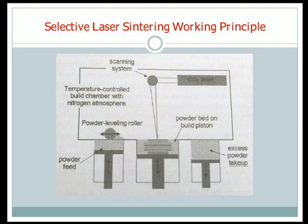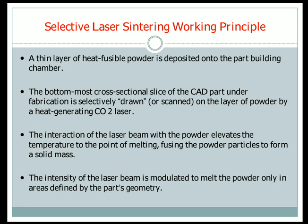A thin layer of fusible powder is deposited through the part-building chamber. The bottom-most cross-sectional slice of the CAD part under fabrication is selectively drawn on the layer of powder by a heat-generating CO2 laser. The interaction of the laser beam with the powder elevates the temperature to the point of melting, fusing the powder particles to form a solid mass.